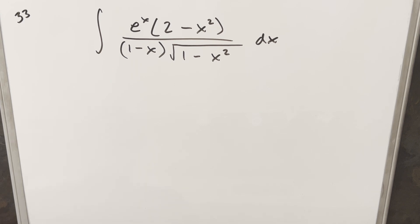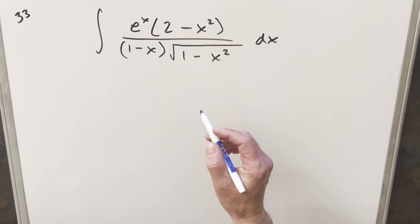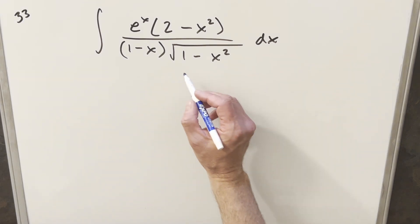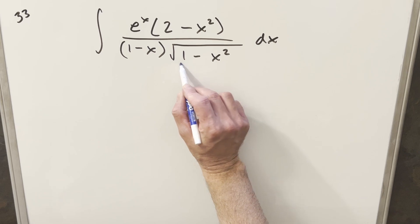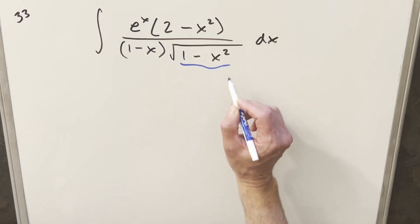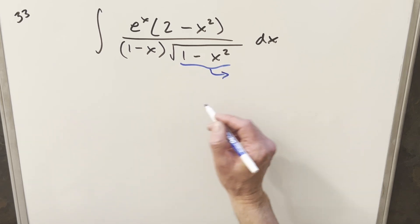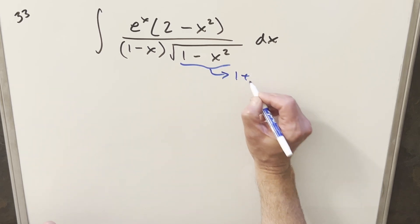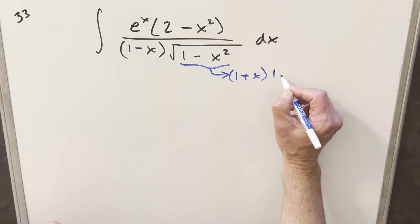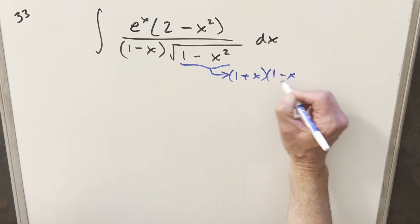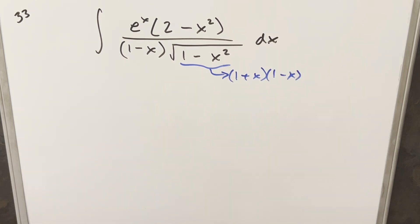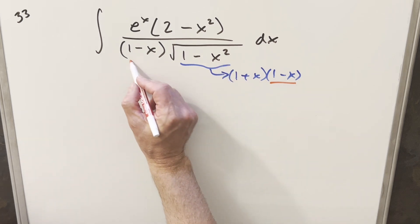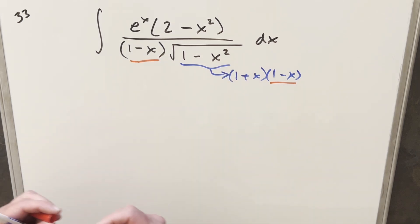At first this was pretty intimidating looking, but then I realized pretty quick that we can definitely try some algebra. We don't really know how it's going to work out, but first of all, inside the square root right here, 1 minus x squared — difference of two squares — I can write this as 1 plus x times 1 minus x.